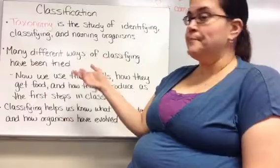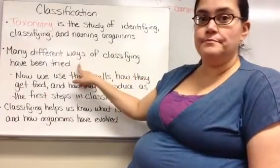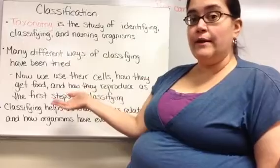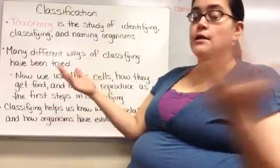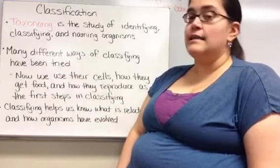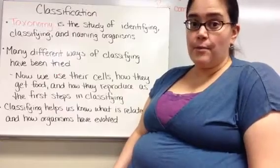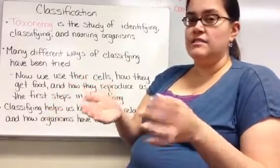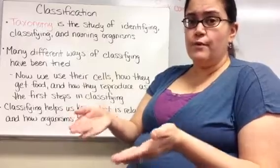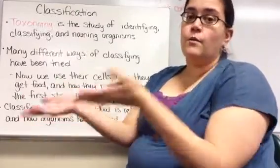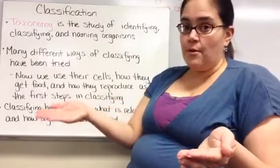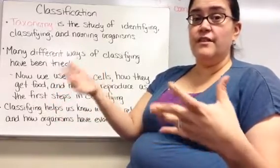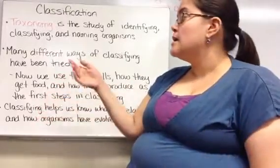Many different ways of classifying have been tried. They used to divide things into plants or animals, but then microscopes revealed a whole other world of organisms that weren't plants or animals, so that didn't work. Then they tried classifying based on appearance, but this became a problem — a shark and a dolphin look similar, are both gray, have similar shapes, and live in the ocean. However, a shark is a fish and a dolphin is a mammal with very different organs and ways of living.